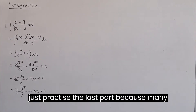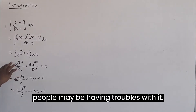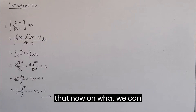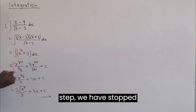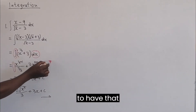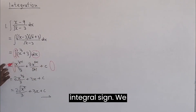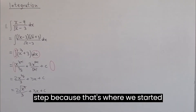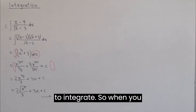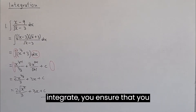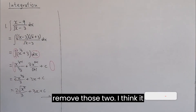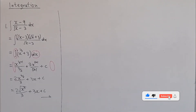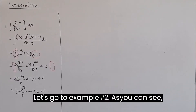Make sure you understand that the moment we reach the integrated step, we have stopped having that integral sign — we removed it together with dx on the next step, because that is where we started to integrate. When you integrate, you ensure that you remove those two. Let's go to example number two.